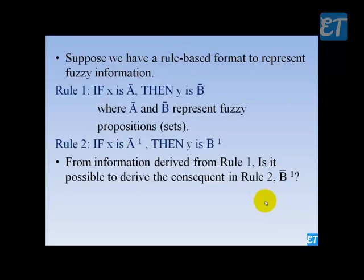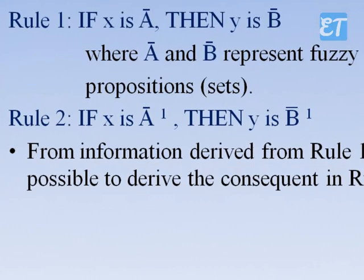Let's begin with a simple example. We have fuzzy information in the form of a rule-based formula. Suppose Rule 1 is: if X is A, then Y is B, where A and B are fuzzy sets. And Rule 2 is: if X is A1, then Y is B1.